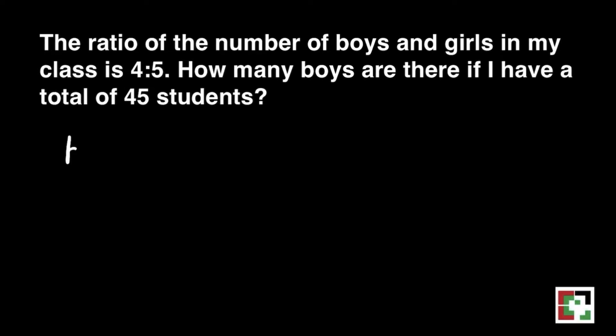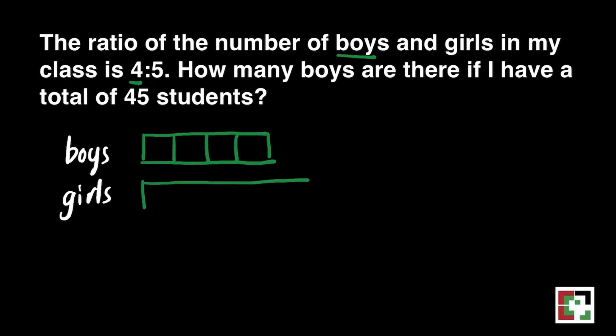Now, we will write boys and girls. Remember that boys were mentioned first, so they will have 4 boxes. Let's draw that. And the girls will have 5 boxes. It has to be correct. Whatever is being mentioned first, it has to be that number too.